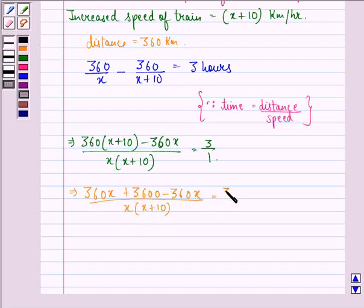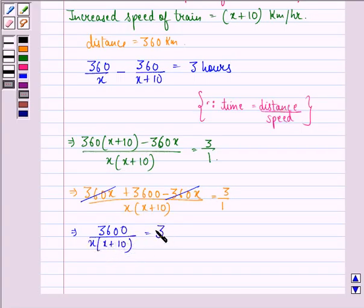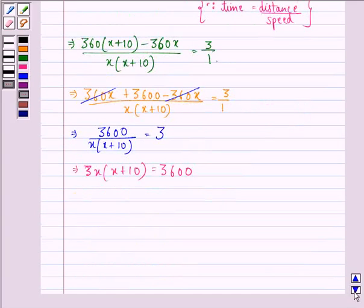This implies 360x plus 3600 minus 360x divided by x into x plus 10 is equal to 3 upon 1. The 360x terms cancel, so we have 3600 divided by x(x+10) equals 3. This implies 3x into x plus 10 equals 3600, giving 3x squared plus 30x minus 3600 equals 0.